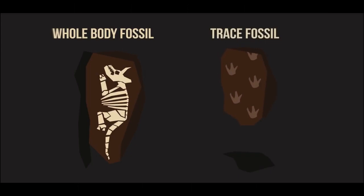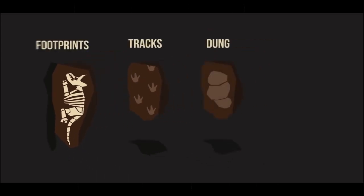Trace fossils are the fossilized remains of things animals or plants have left behind. This includes footprints, tracks, dung, and even lightning strikes.